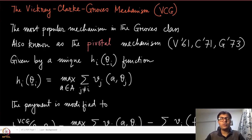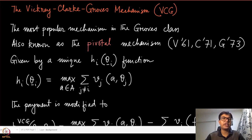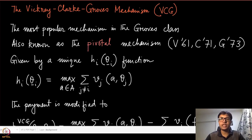We are going to discuss one of the most celebrated mechanisms of mechanism design with transfers, known as the VCG mechanism, named after the inventors Vickrey, Clark, and Groves. This is also known as Clark's pivotal mechanism, and it belongs to the class of Groves mechanisms.